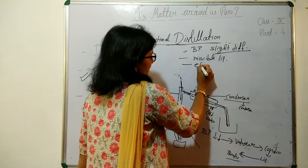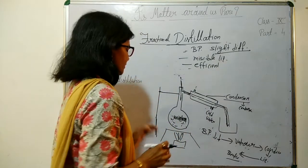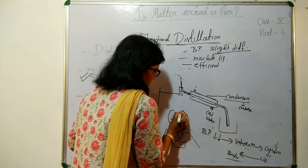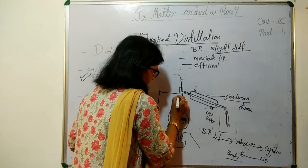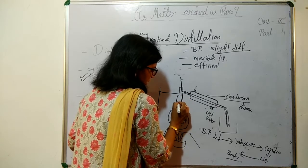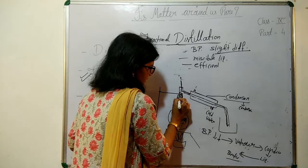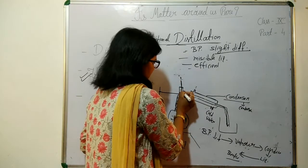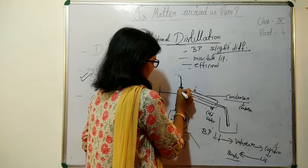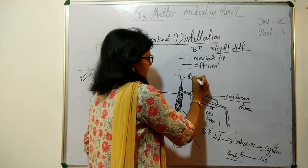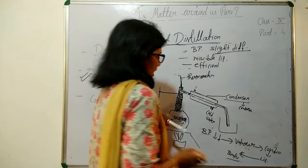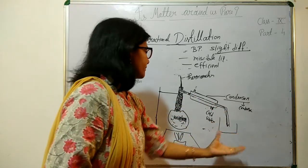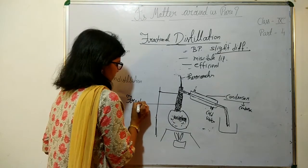It is a more efficient process. Now let's see how it is more efficient. The setup is the same except we are adding one more column — the fractional column. Here we use a fractional column having many glass beads. Everything else is the same as in the distillation method, including the thermometer. The lower boiling point liquid will go upward and condense, and we will collect it from here.